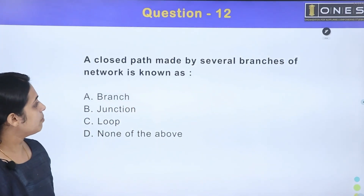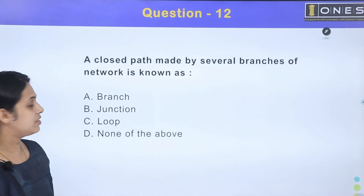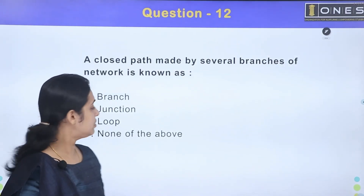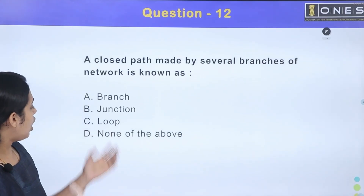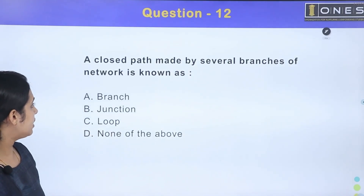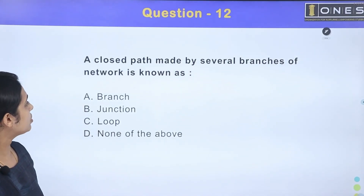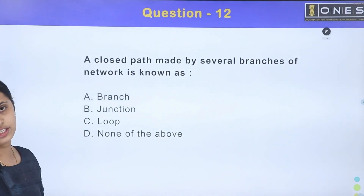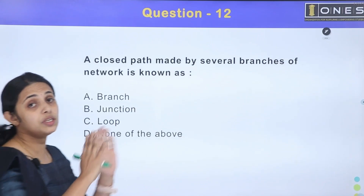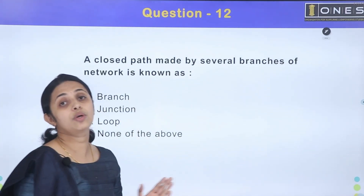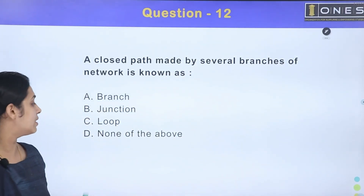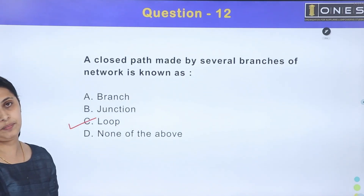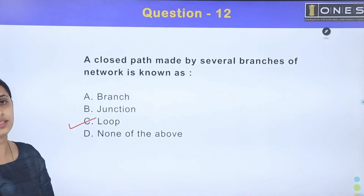Next question: a closed path made by several branches of a network is known as what? Options are: Option A — branch, Option B — junction, Option C — loop, Option D — none of the above. A closed path made by several branches of a network is called a loop. The answer is Option C, loop.